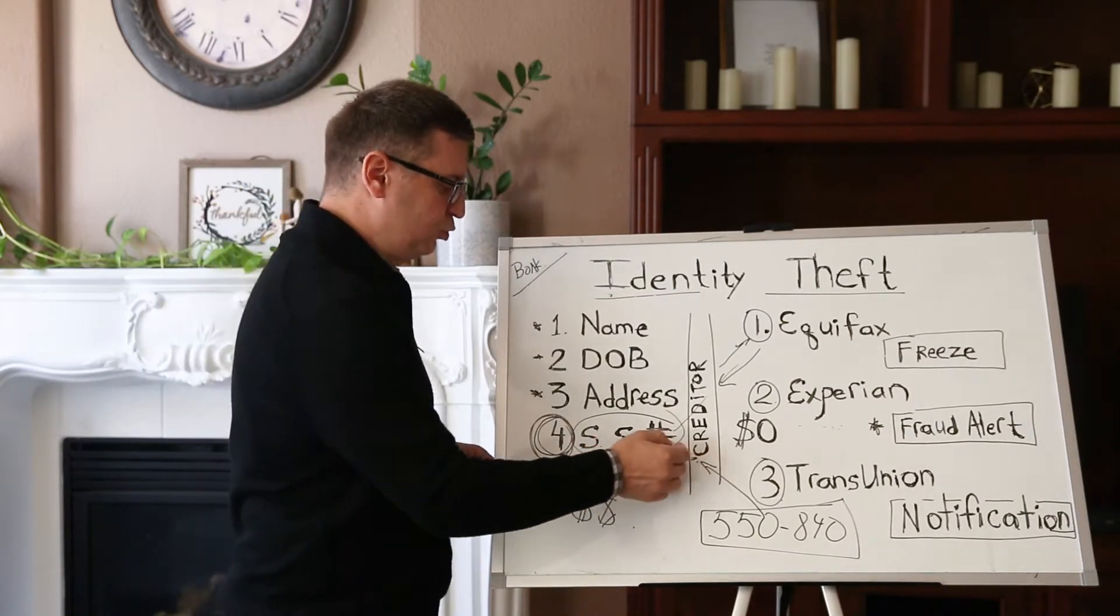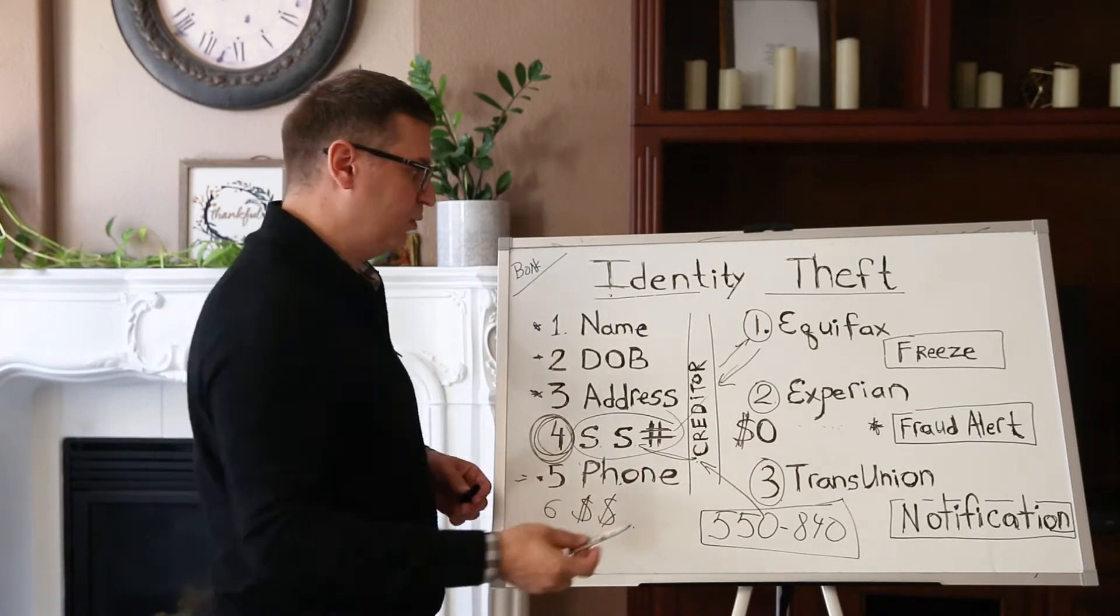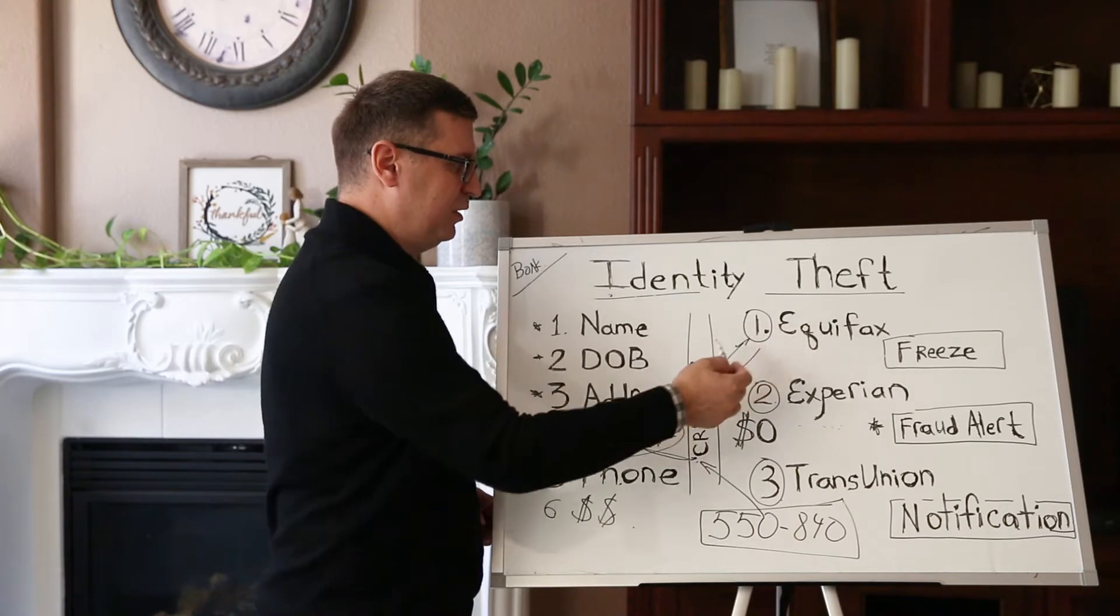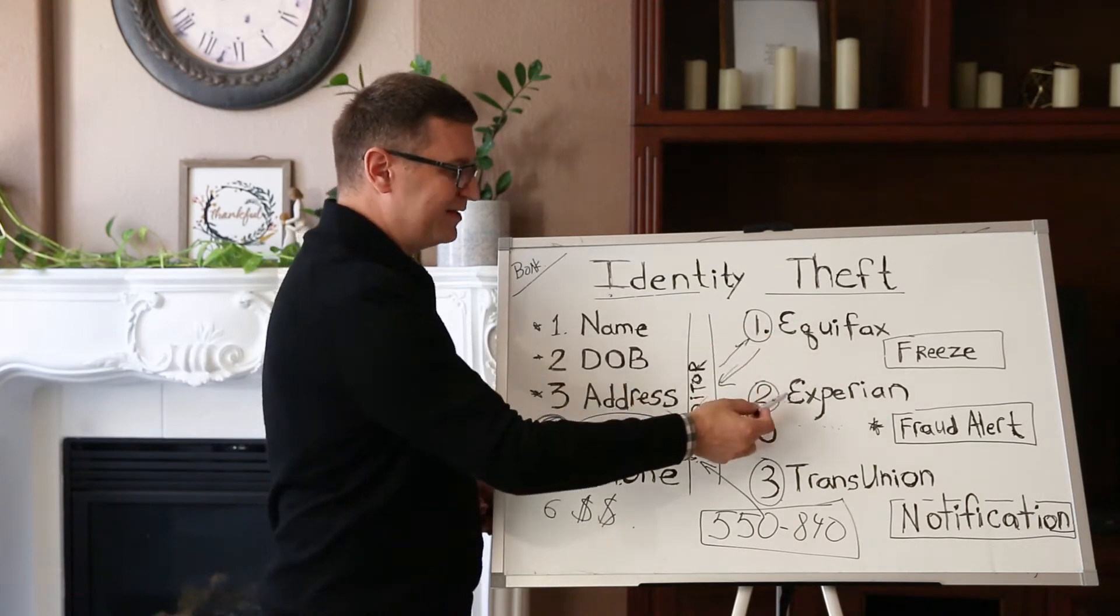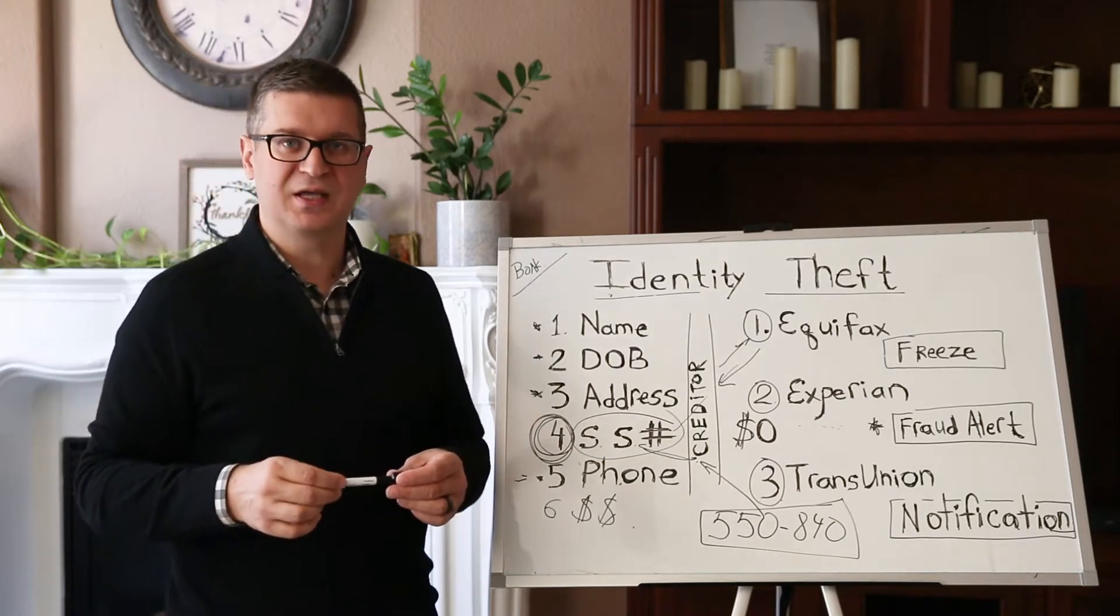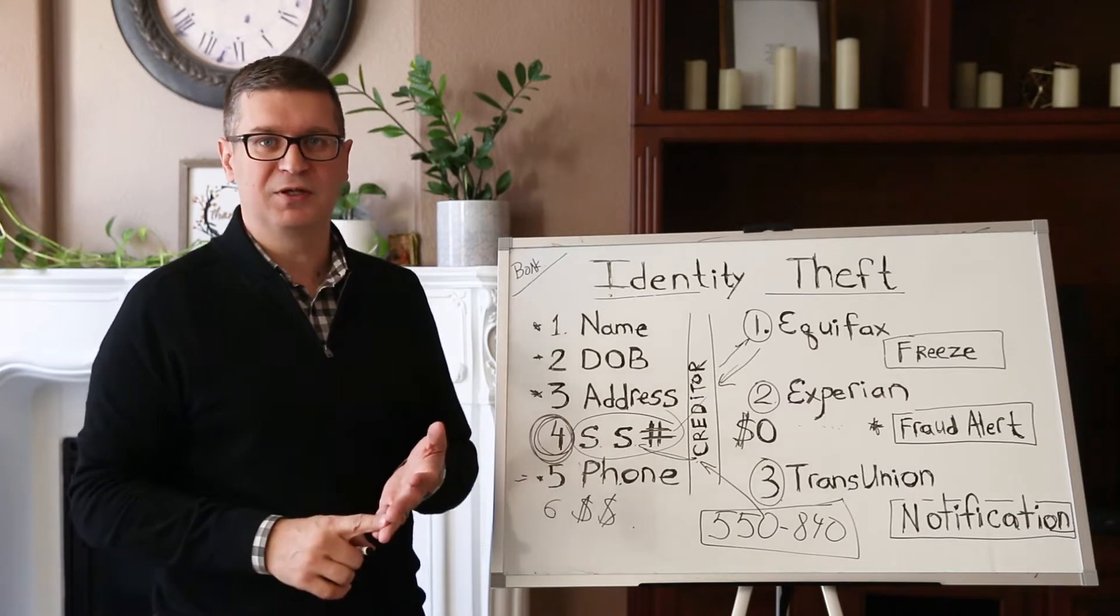Creditors, as you guys probably know, pull your credit from Equifax, Experian, and TransUnion. Those are the three agencies that have all our information, our late payments, our bankruptcies, and so on.